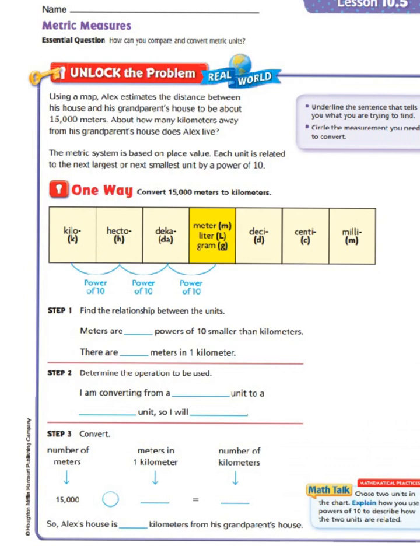Well let's underline the sentence that tells you what you are trying to find. The sentence that tells me what I'm trying to find is the one that ends in a question mark: about how many kilometers away from his grandparents house does Alex live? Now circle the measurement you need to convert. The measurement we need to convert is his estimate. He estimates his grandparents house to be about 15,000 meters away.